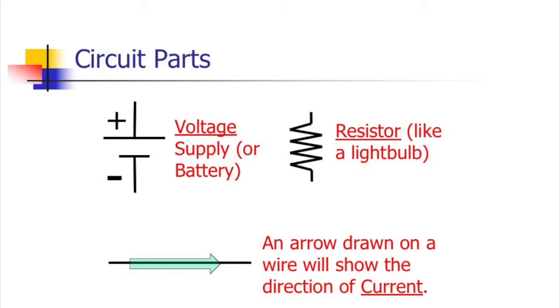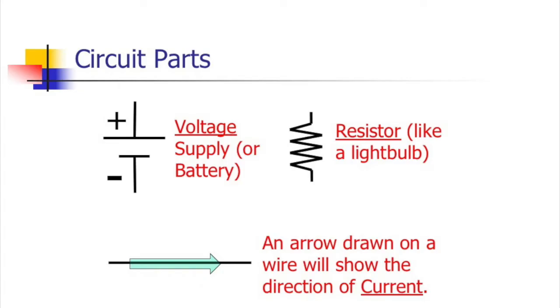Looking at circuit parts: the voltage supply symbol has a longer side and a shorter side — the longer side is always positive (plus). Resistors are drawn as zigzag lines. In my class, one long side and one short side is all you need to show a battery. You also draw an arrow to show which direction the current is going — always from positive to negative.